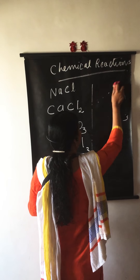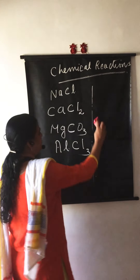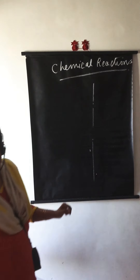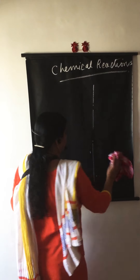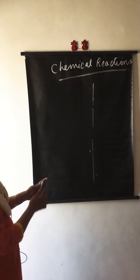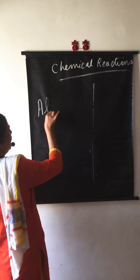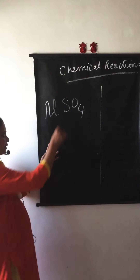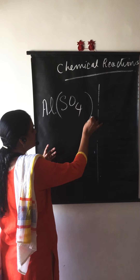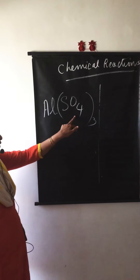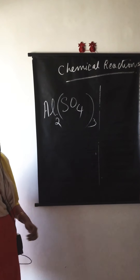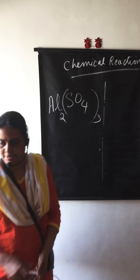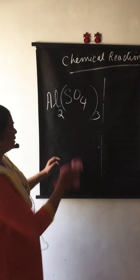Let us see some more examples. Aluminium sulphate: aluminium is Al, sulphate is SO4. The valency of aluminium is 3, so it is written under sulphate. The sulphate valency is 2, written under aluminium. So the formula of the compound is Al2(SO4)3. Now let us see how to write the equations.